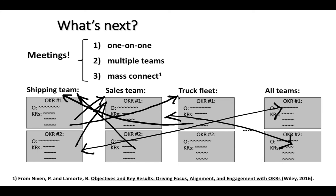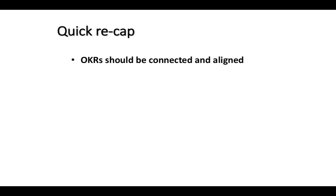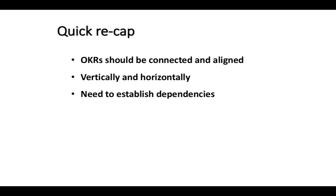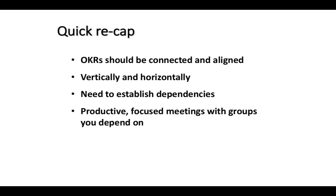While this might appear complex, and sometimes it probably is, their book lays out an agenda to try to keep it simple and practical. OKRs should be connected and aligned, and the connections should be from both the vertical and the horizontal perspectives. For horizontal alignment, we need to establish dependencies across units and teams. This will require productive, focused meetings with other groups that you depend on — and of course, other groups are going to depend on you. If you follow the approach in this video, you will be amazed at the results you can achieve.